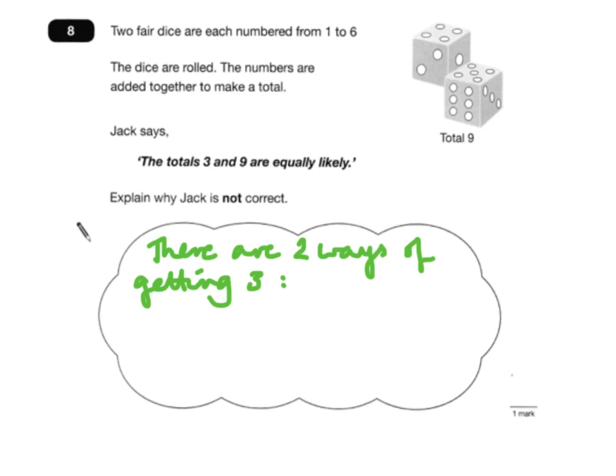Well, he's wrong, because there are just two ways of getting a three if you roll two dice. You can get two on one dice and one on the other, or one on one dice and two on the other.